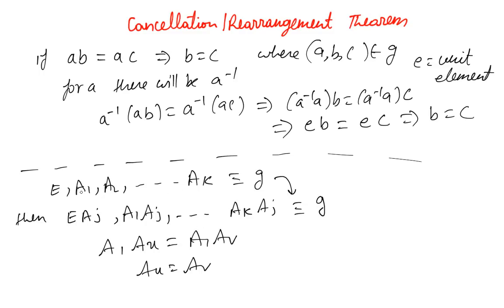we multiply all the elements of a group by any particular element in the group itself. So these are two basic theorems we were supposed to discuss.